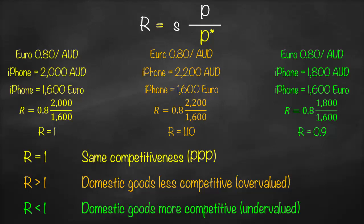To summarize: in the second example, when we increased the iPhone price to 2,200, R was greater than one, meaning our domestic goods are less competitive — relatively more expensive — and our currency is overvalued, so it's better to buy iPhones from Italy. In the third example, with R equal to 0.9, goods are cheaper in Australia and our currency is undervalued. In the first example, R equals one, meaning same purchasing power — buying an iPhone from Australia is exactly the same as buying it from Italy.